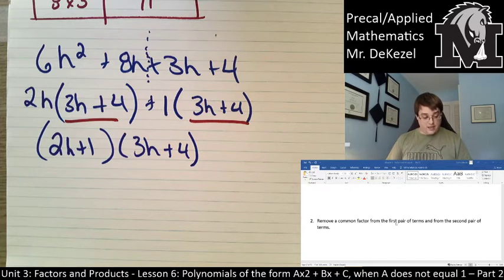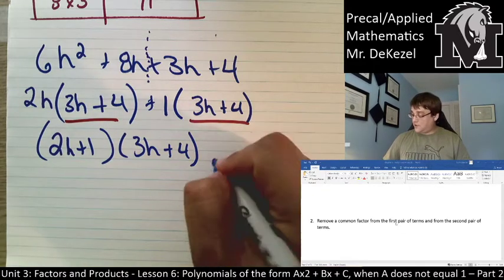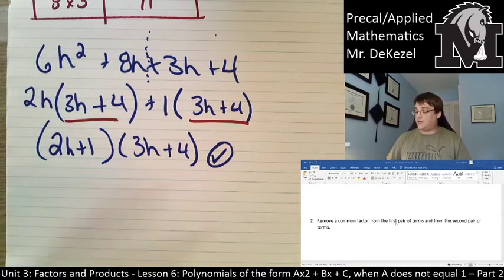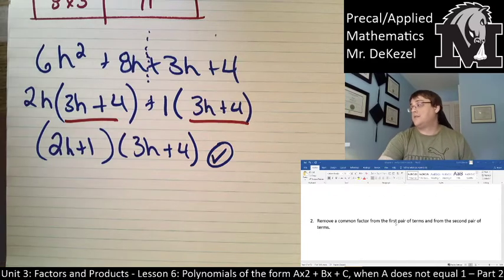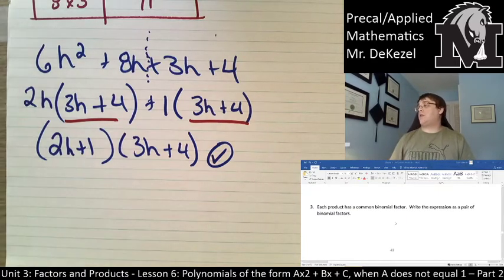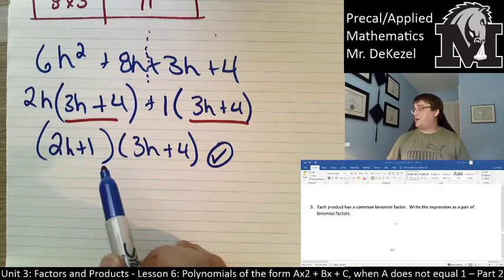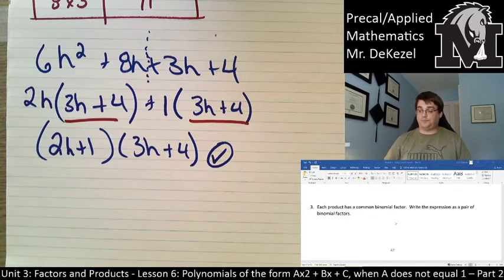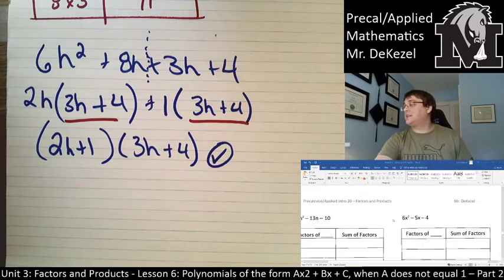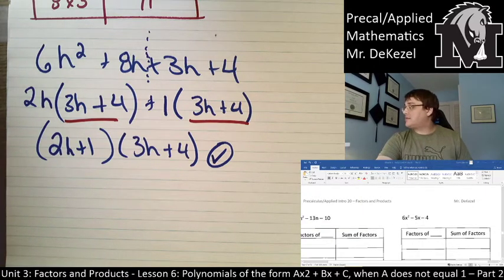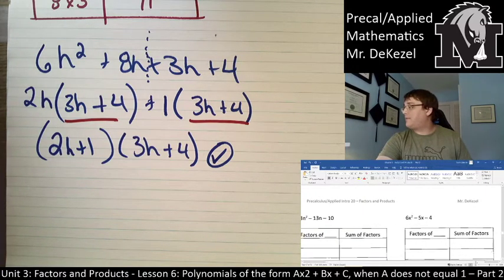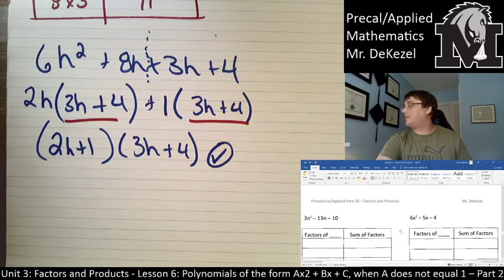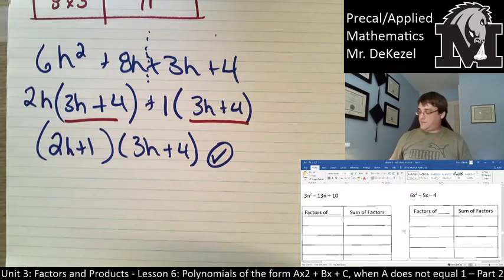You can definitely go ahead and check that. 2h plus 1, 3h plus 4. That is correct. So, that is what I would write in the third box down here in your paper. Each product has a binomial common factor. Write the expression as the pair, like we did. Let's get into some problems.